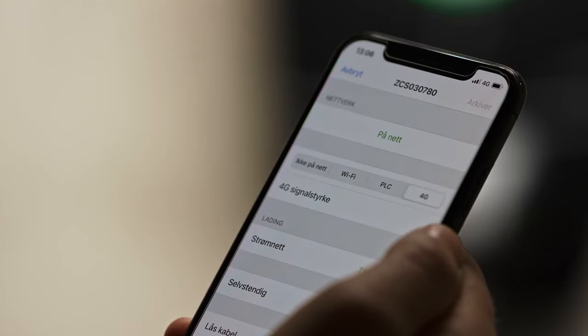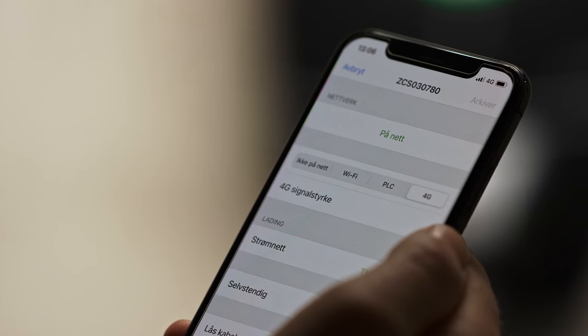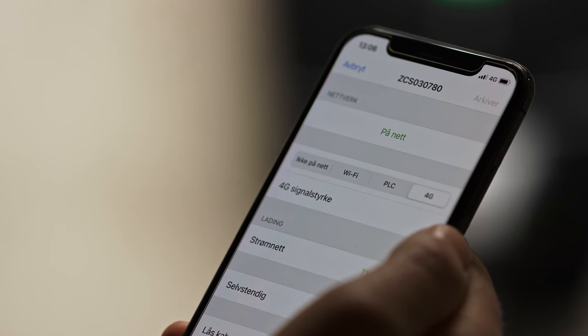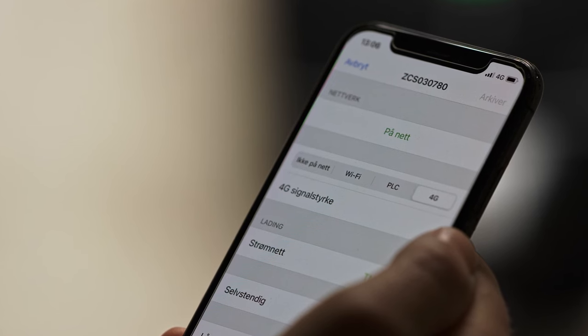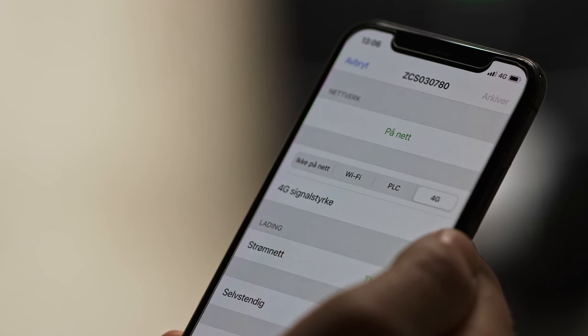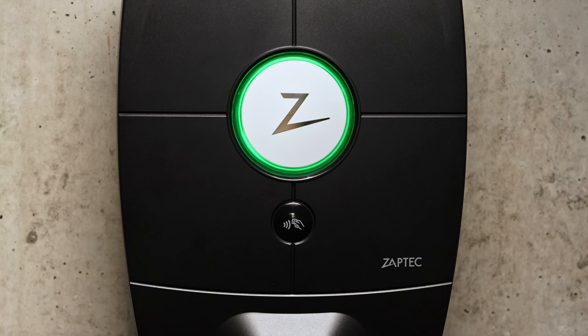If you have not already added the installation in the Zaptec portal, it is important to remember to do so now. Ensure you provide the customer with the user manual and other relevant information before leaving the installation site. The pin code can be found on the box or in the zipper bag with the smart key. Installing Zaptec Pro is that easy.